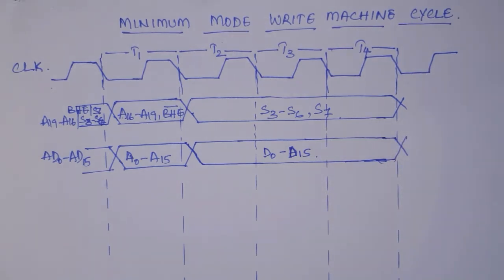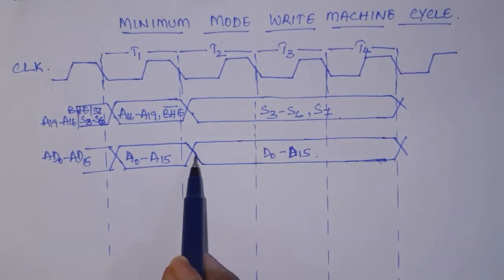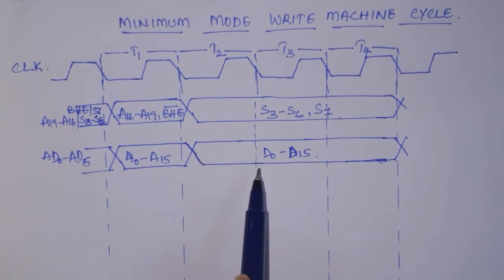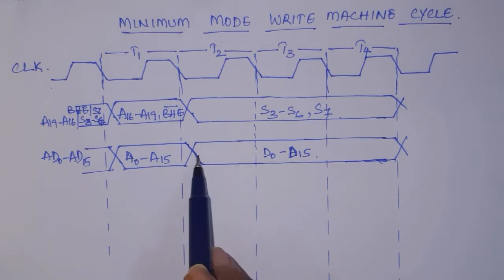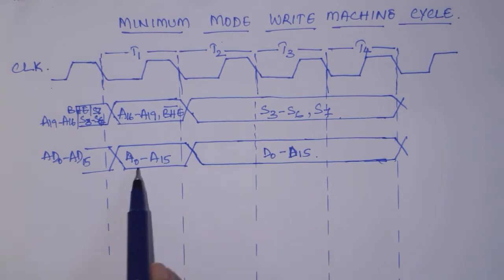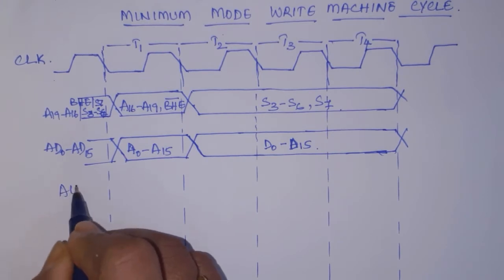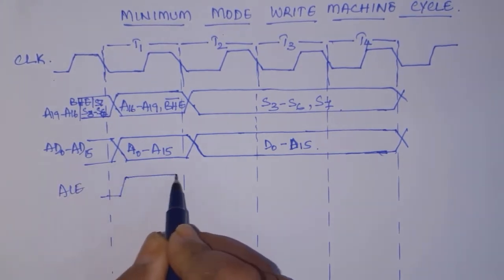You can make out the difference between the read and write machine cycles: in the read cycle, data is not there with the processor so the lines were floating until the data came. But in the write cycle, the processor has the data with it, so data is immediately put on these lines after the address is latched. ALE will be high for the first T-state and low for the rest of the T-states.